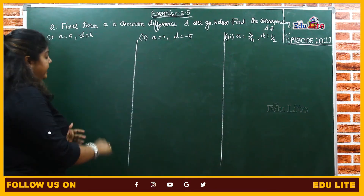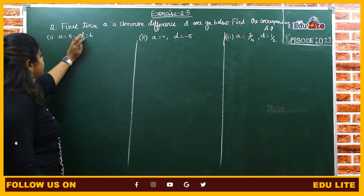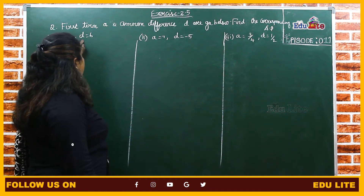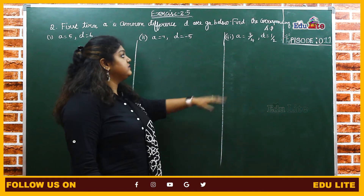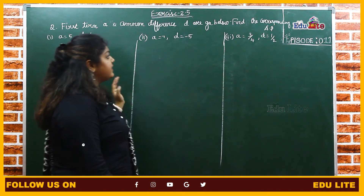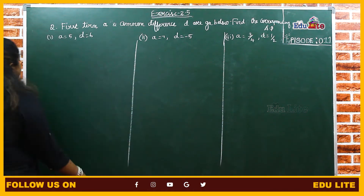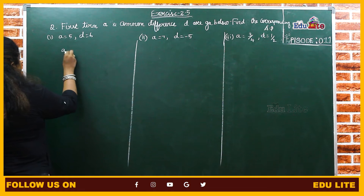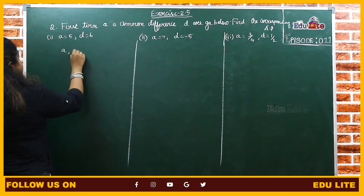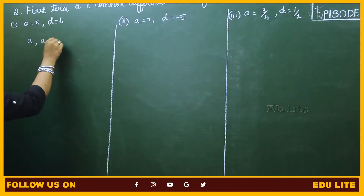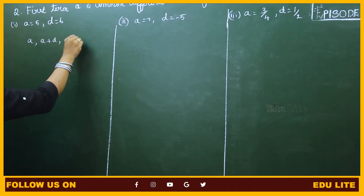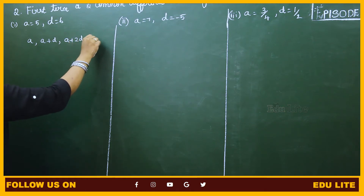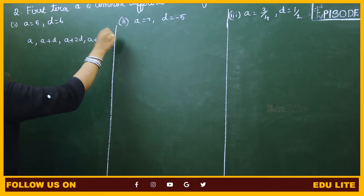In the second problem, we are given A and common difference D in three subdivisions, and we have to find the AP. The formula for an AP is: A, A plus D, A plus 2D, A plus 3D, and so on.